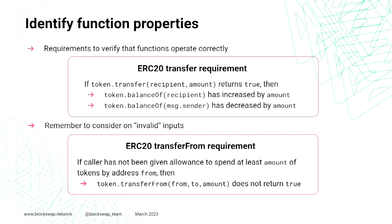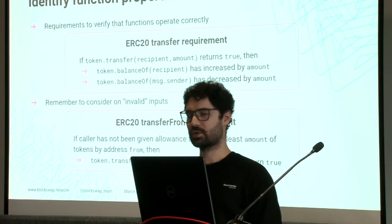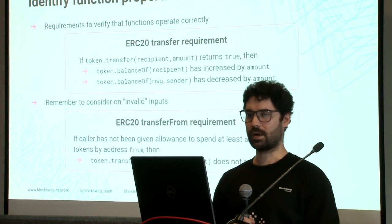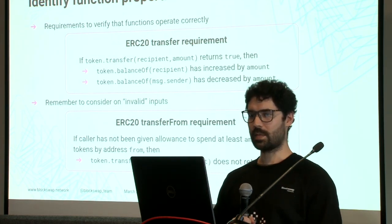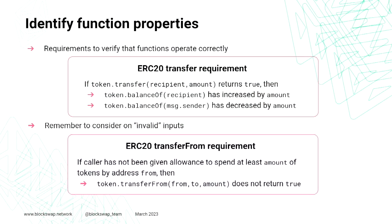So how do we identify function properties? This is tricky — I think it's the hardest part of formal verification. It's figuring out what properties we want for our functions. An example from the ERC20 contract: when we transfer an amount to a recipient, the balance of the recipient must have increased and the balance of the sender must have decreased.